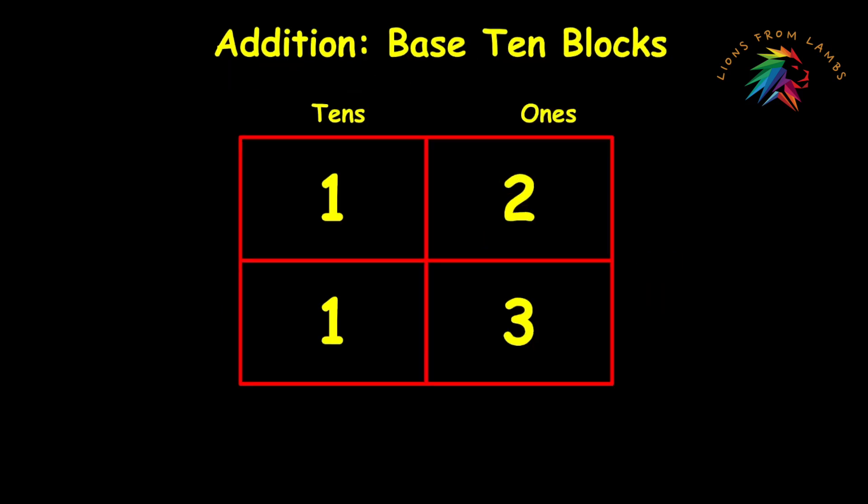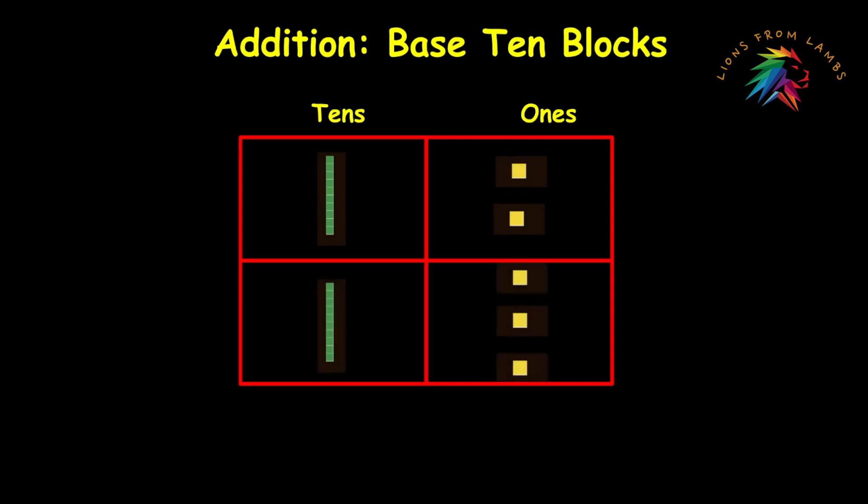So let's go ahead and stack our numbers and we're going to use our frame on this one just to keep everything aligned correctly. If we're using base 10 blocks for this two digit addition problem we can represent the 12 as one rod and two units and we can represent the 13 as one rod and three units.